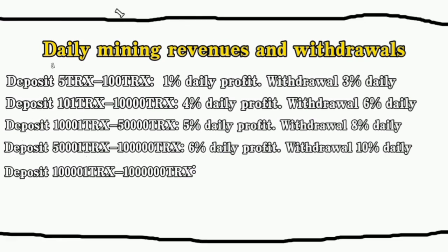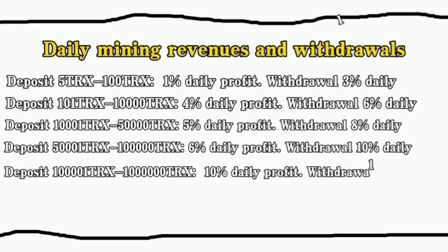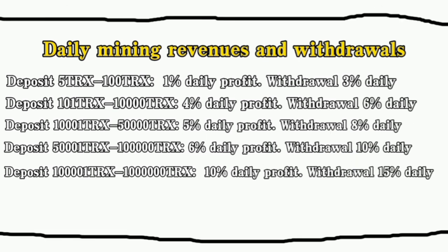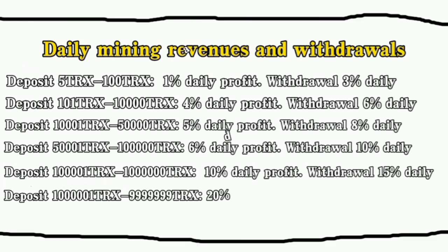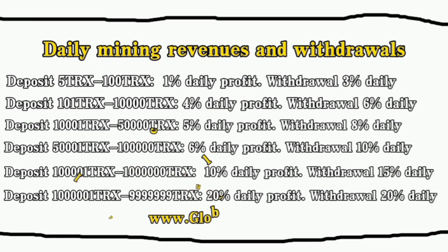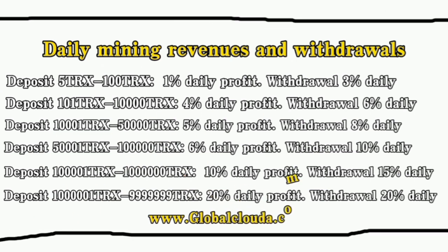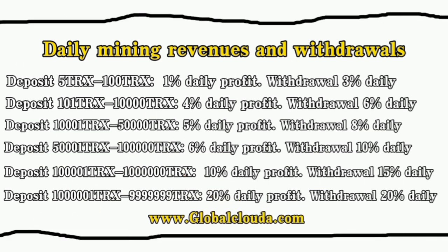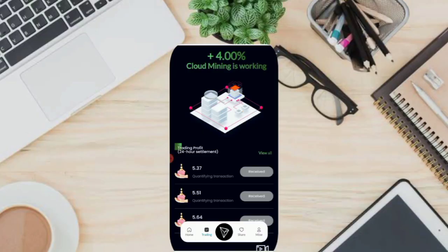Deposit 100,001–1,000,000 TRX to get 10% daily profit and withdrawal 15% daily. Deposit 1,000,001–9,999,999 TRX to get 20% daily profit and withdrawal 20% daily.